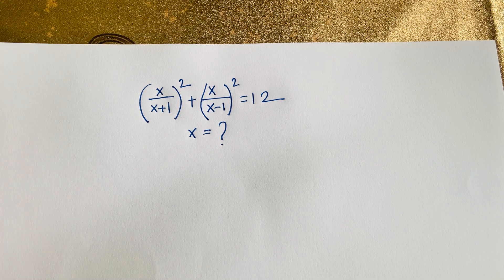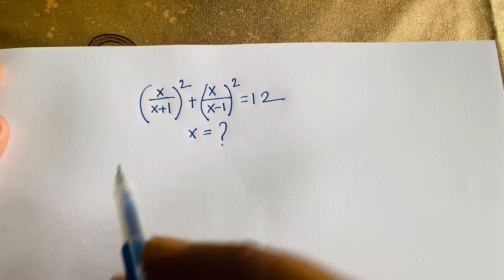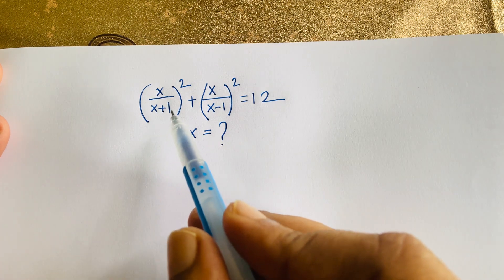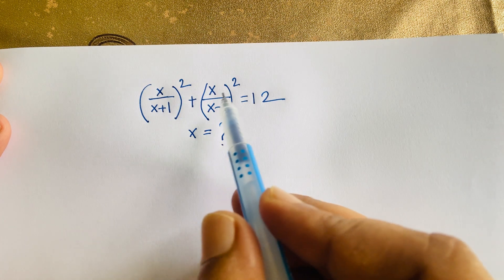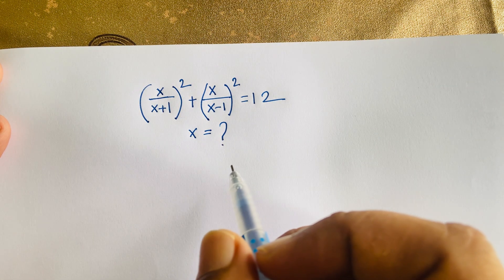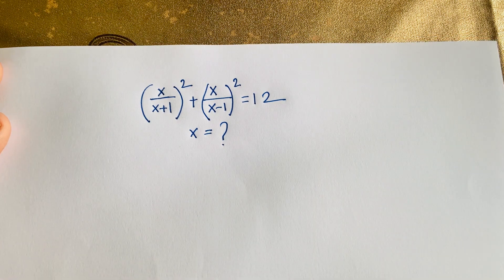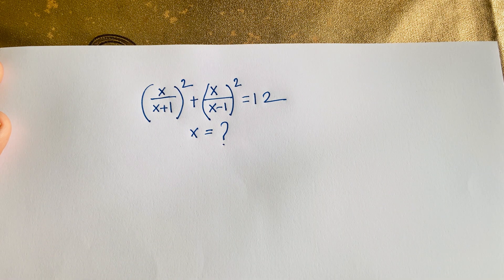Hello everyone. In this video, we have solved a Math Olympiad question: x over (x+1) whole square plus x over (x-1) whole square is equal to 12. We have to find out what is the value of x in this Math Olympiad question. So how to solve this question?